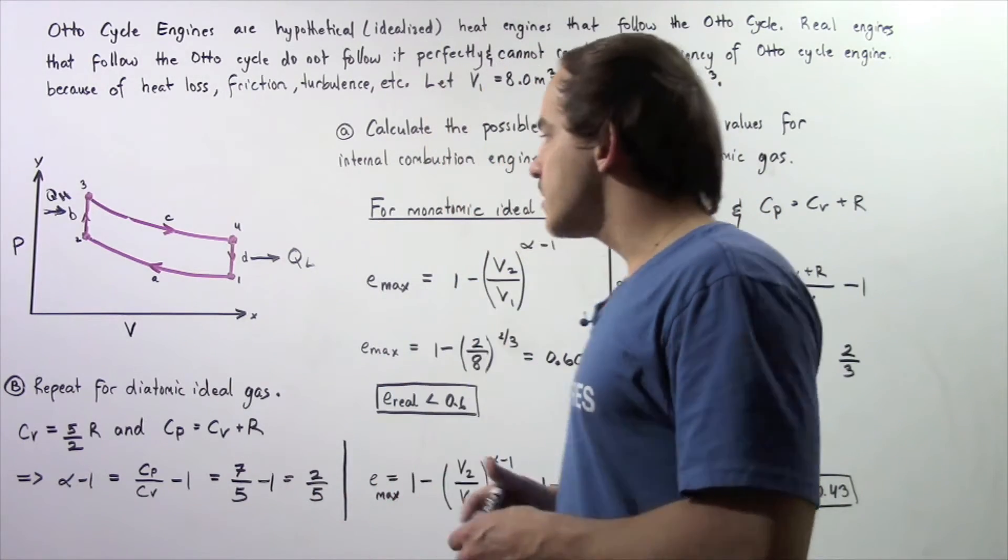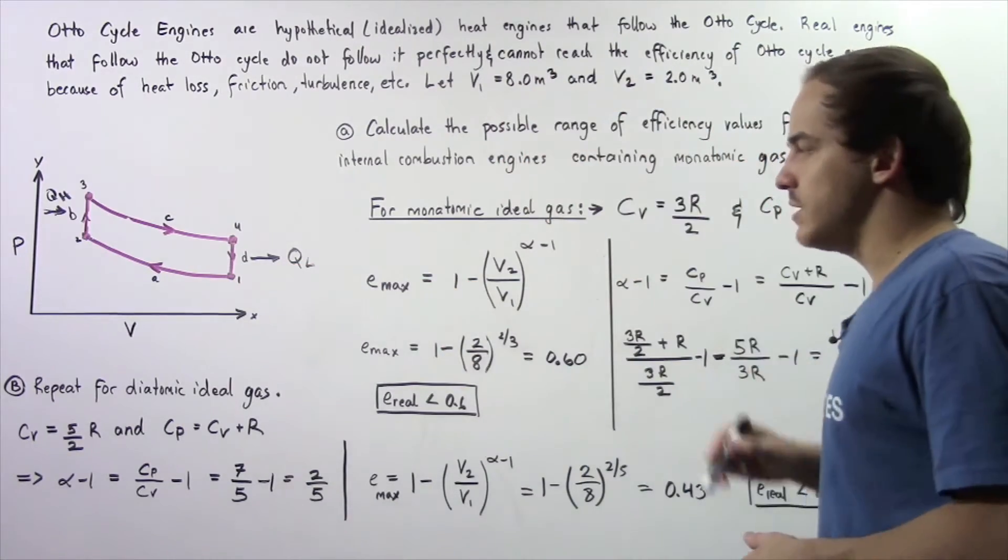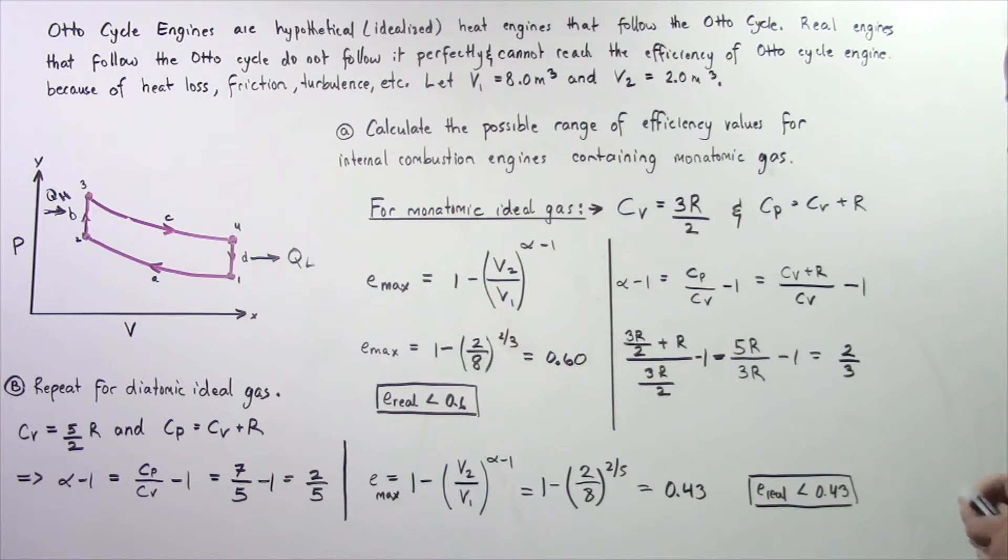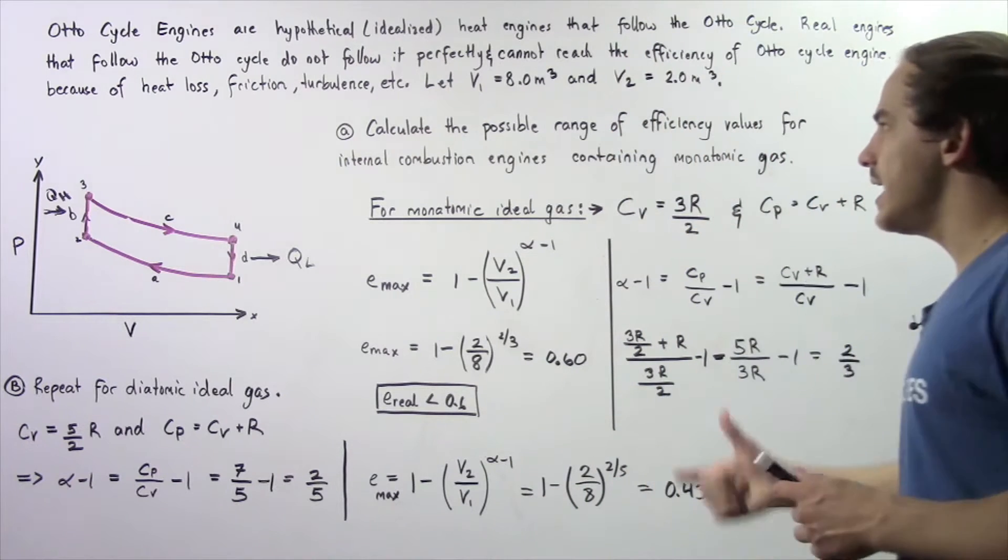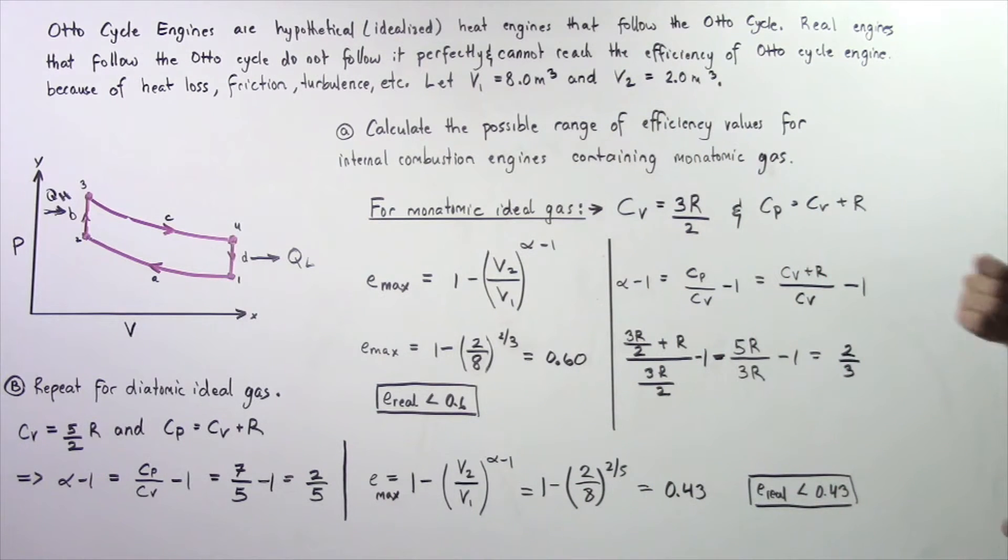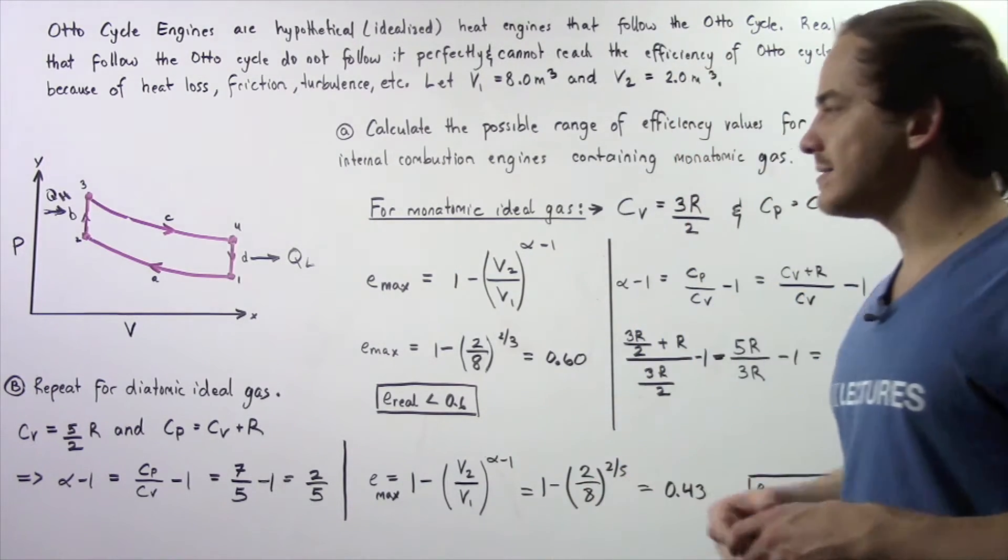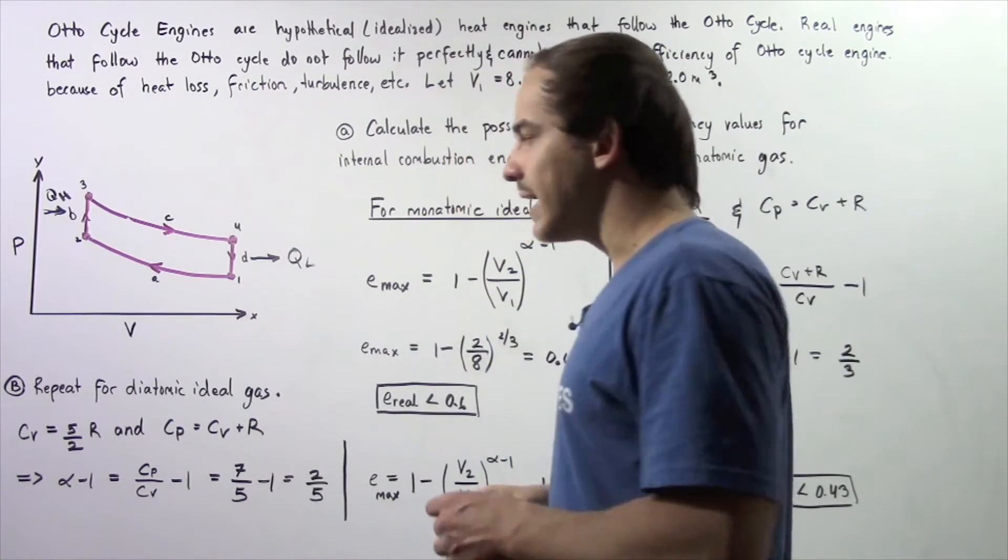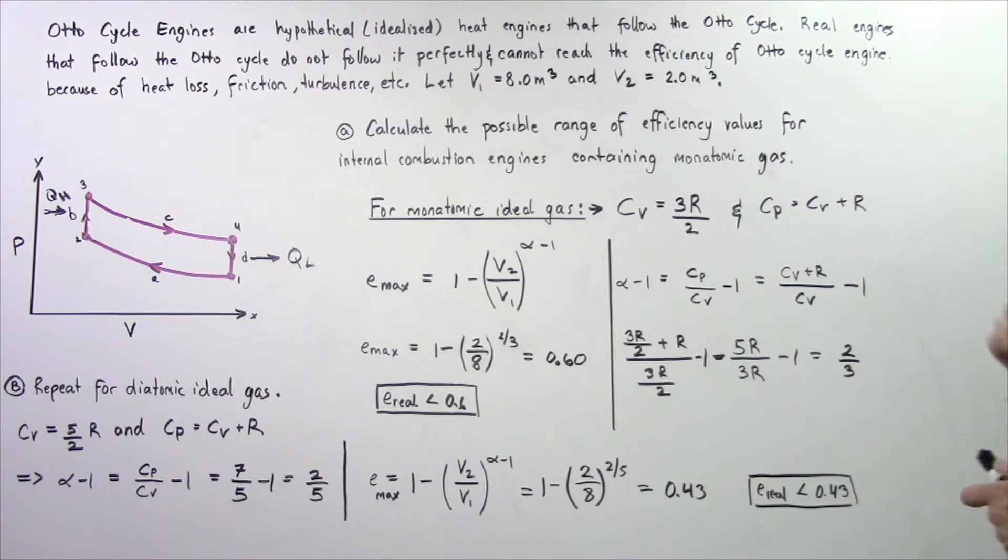Now suppose the volume of the gas at position 1 is 8 meters cubed and the volume of the gas at position 2 is 2 meters cubed. Using this value we want to calculate in part A the possible range of the efficiency values for an internal combustion engine containing a monatomic gas. And in part B we'd like to repeat that step for a diatomic ideal gas. So let's begin with part A.